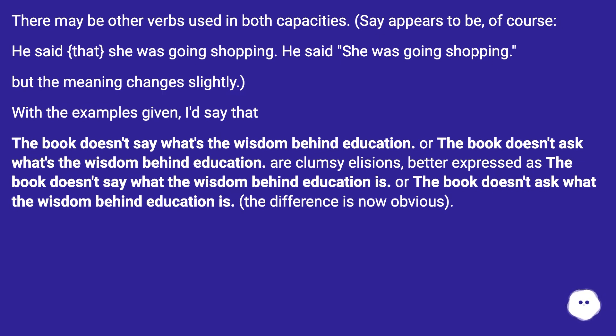With the examples given, I'd say that the book doesn't say what's the wisdom behind education, or the book doesn't ask what's the wisdom behind education, are clumsy elisions, better expressed as the book doesn't say what the wisdom behind education is, or the book doesn't ask what the wisdom behind education is. The difference is now obvious.